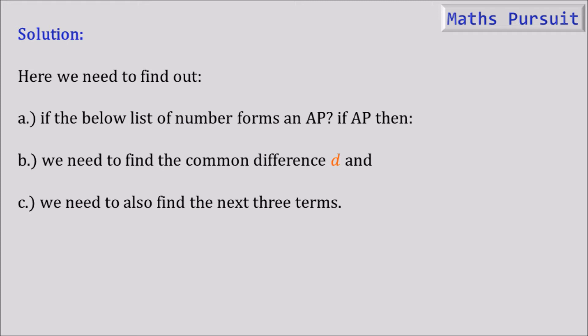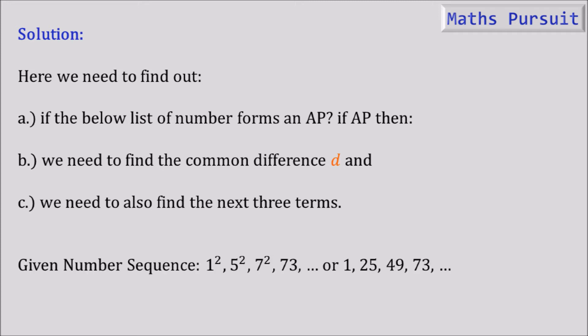The given number sequence is 1², 5², 7², 73. We can write this as: 1² = 1, 5² = 25, 7² = 49, and 73 as it is.